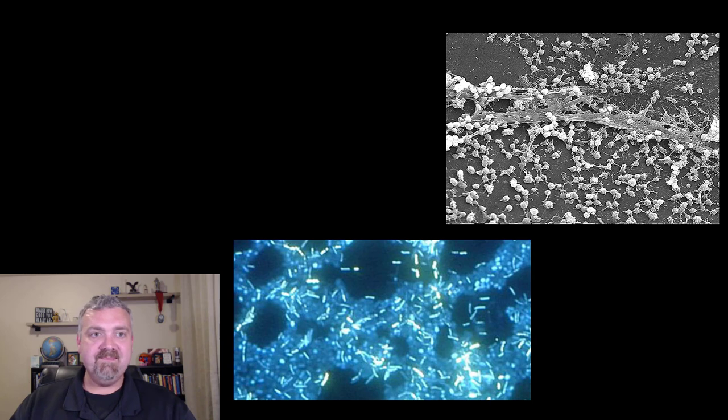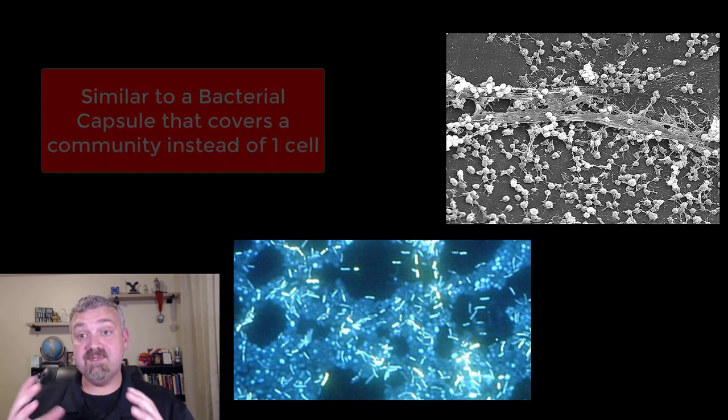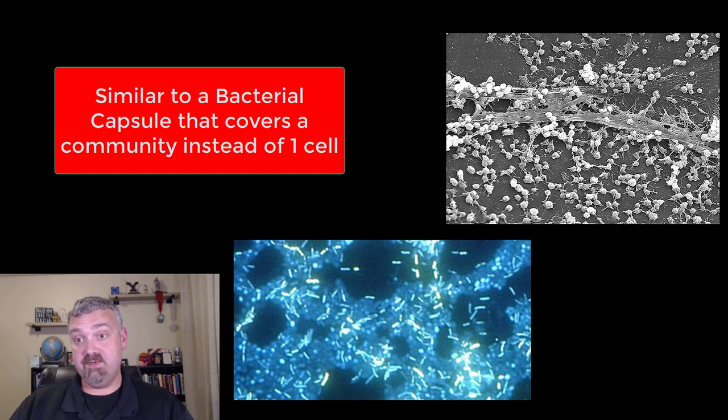You really see that slimy, it's called an extracellular polymeric substance or EPS, but this gooey, sticky substance is secreted into the environment and microbes can live in and underneath it. I like to say that the capsule that a single organism can produce is actually shockingly similar to a biofilm. So a biofilm is basically, think about a capsule over a group of organisms.